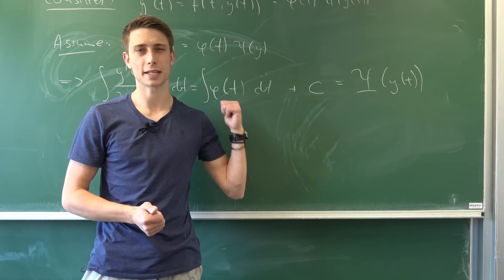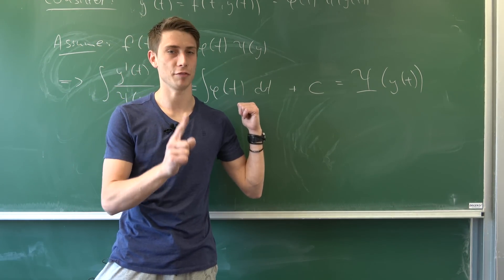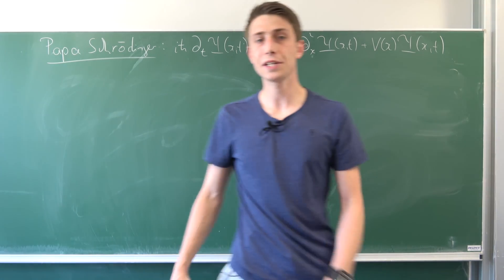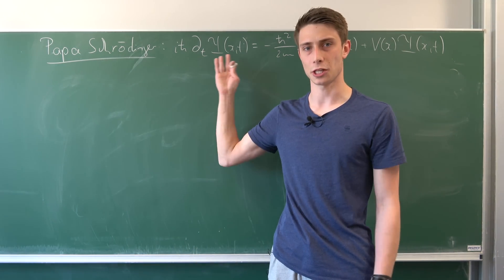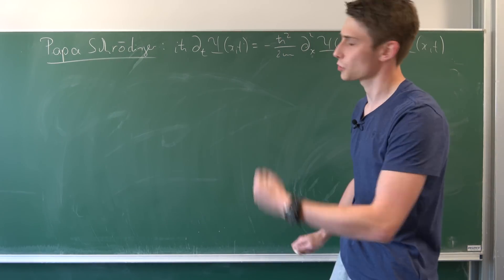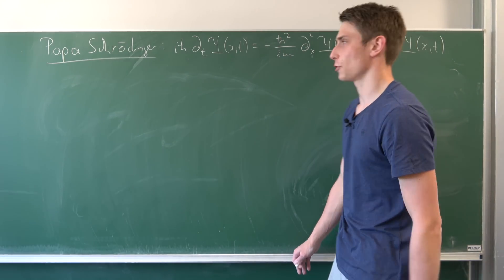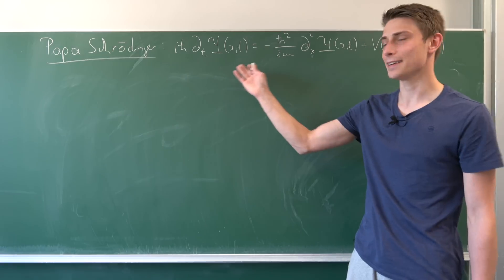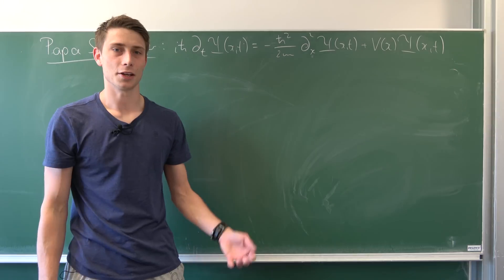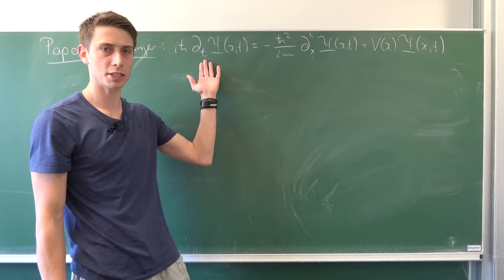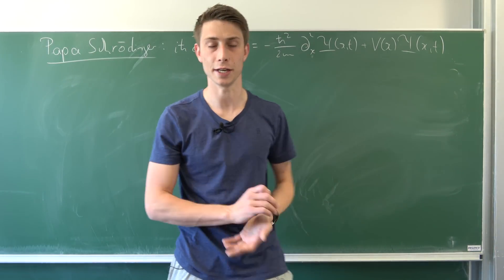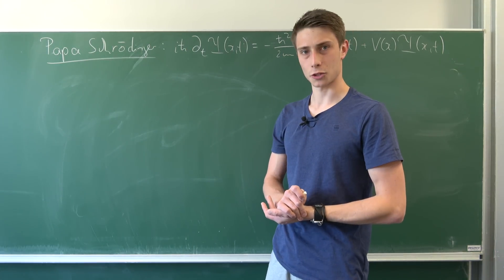Now we want to use this technique on a very famous equation. In the normal case this would be subject to partial differential equations and another video, but I just want to show you the power of separation of variables. This right here, as you might notice, is the Schrödinger equation — and we are going to turn this time-dependent Schrödinger equation into a stationary Schrödinger equation.